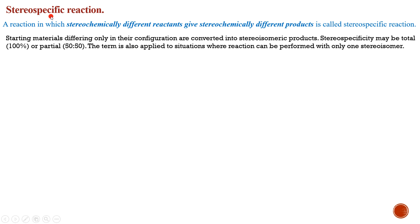If you want to define a stereospecific reaction, it is a reaction in which stereochemically different reactants result in stereochemically different products. So everything is decided by the starting material — the stereochemistry of the starting material — and stereospecificity may be either 100% or it could be partial, 50-50.